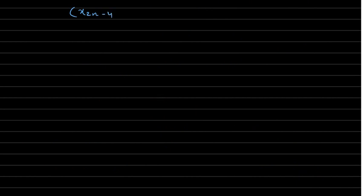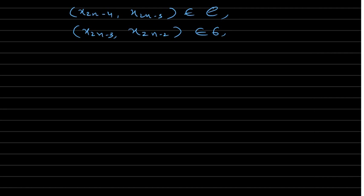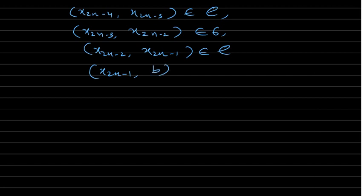Continuing this pattern, we have (x_{2n-4}, x_{2n-3}) in rho and (x_{2n-3}, x_{2n-2}) in sigma, then (x_{2n-2}, x_{2n-1}) in rho again, and finally we reach B here — so the chain ends at B.